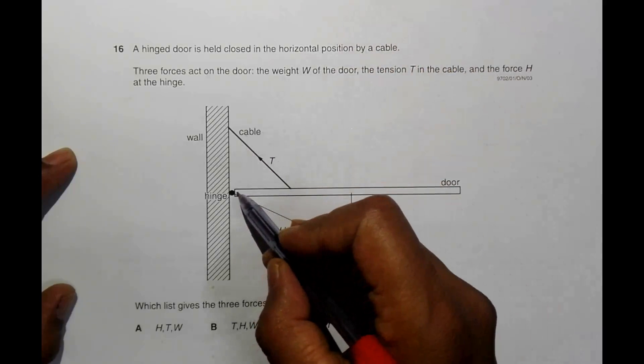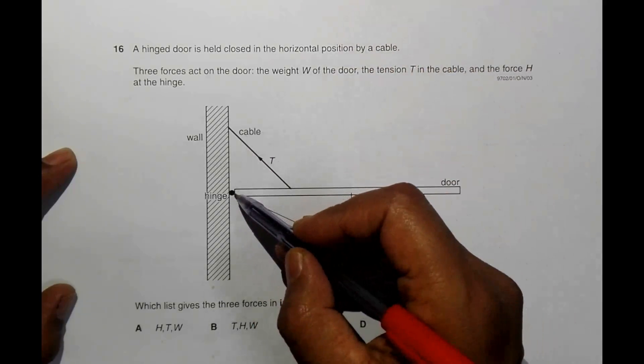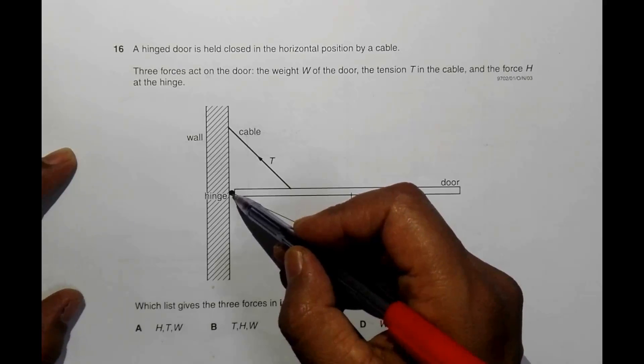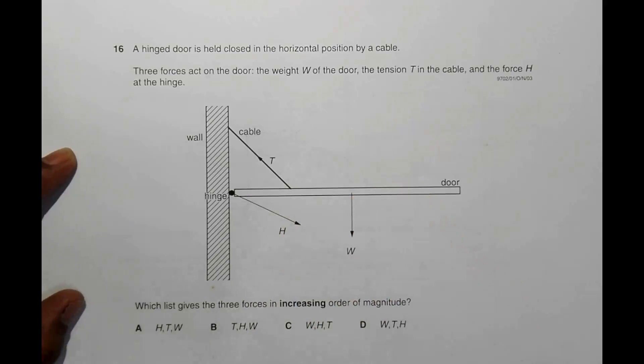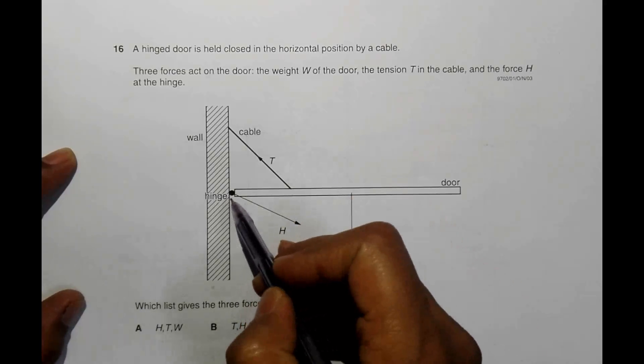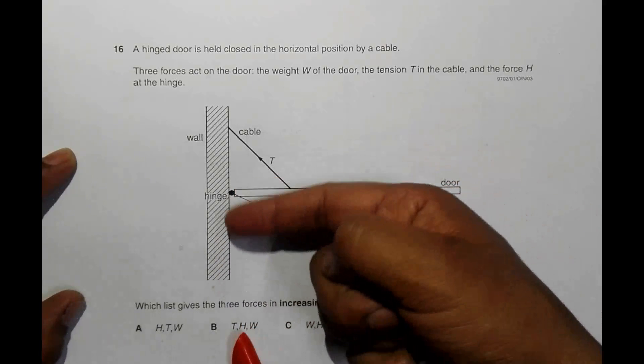There is tension T in the cable which will try to hold the door like this, and the force H at the hinge. So there will be some force over here and it has to withstand that force.